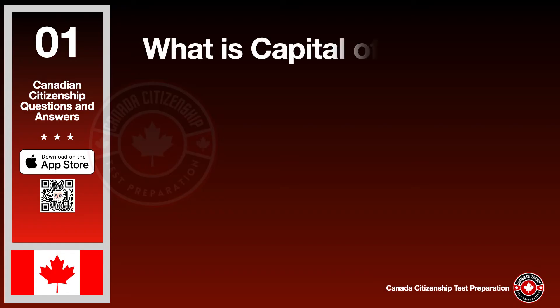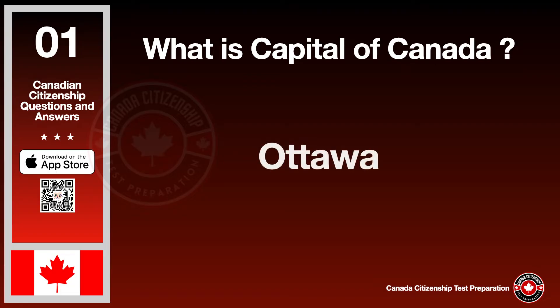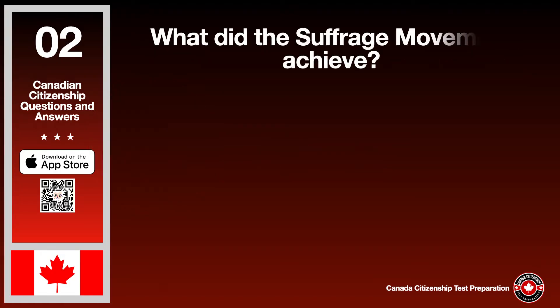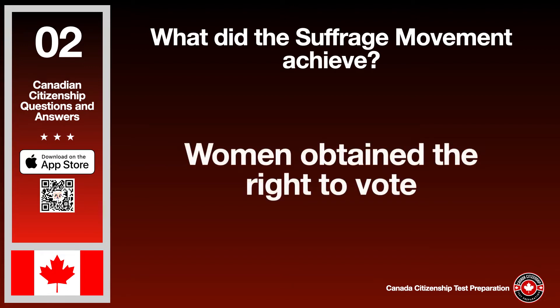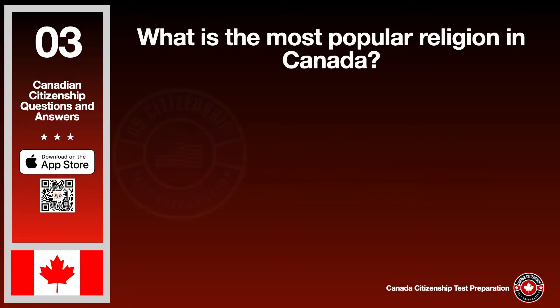What is the capital of Canada? The answer is Ottawa. What did the suffrage movement achieve? The answer is women obtained the right to vote. What is the most popular religion in Canada? The answer is Christianity.